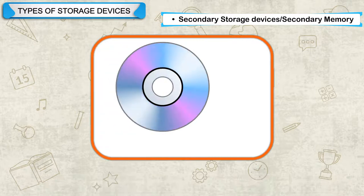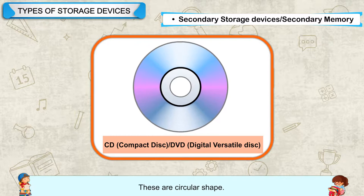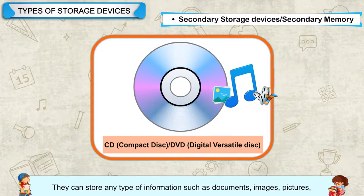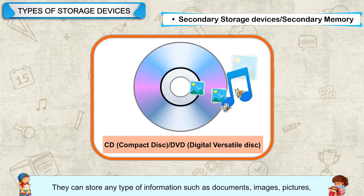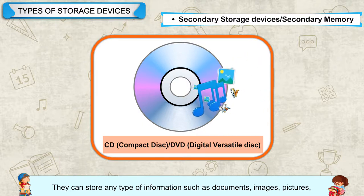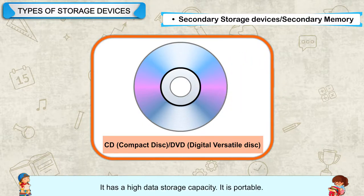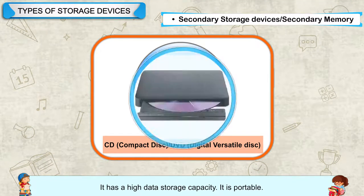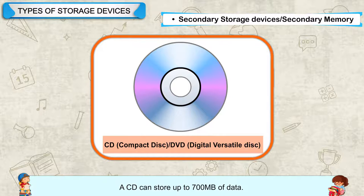CD — Compact Disk, or DVD — Digital Versatile Disk: These are circular in shape. They can store any type of information such as documents, images, pictures, games, software, etc. They have a high data storage capacity and are portable. A CD can store up to 700 MB of data.